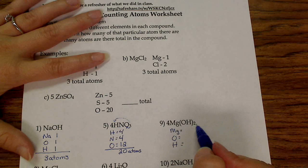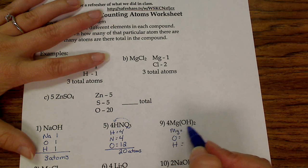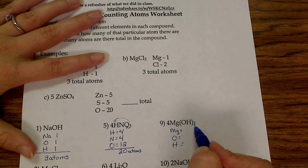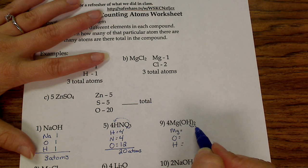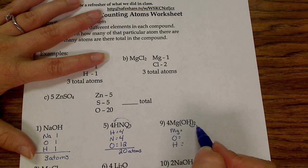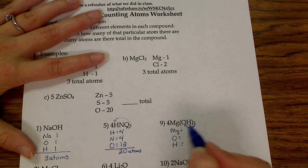Then we look at our subscript. This subscript is on the outside of our parentheses, so it is multiplied to the number of hydrogens and the number of oxygens.